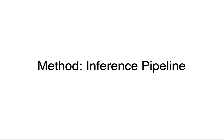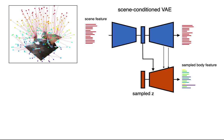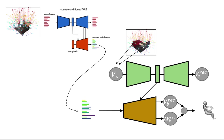During inference stage, we first encode the distance from the fixed BPS in space to the scene mesh as the scene feature. Conditioning on the scene feature, the decoder of the VAE generates the distances between the selected scene vertices and the body from the randomly sampled Gaussian noise Z. Then a full-body mesh is regressed from the generated body feature conditioned on the selected scene-vertex locations.